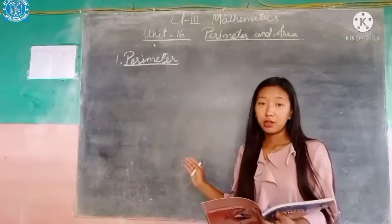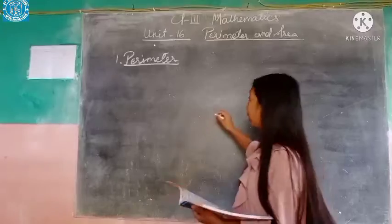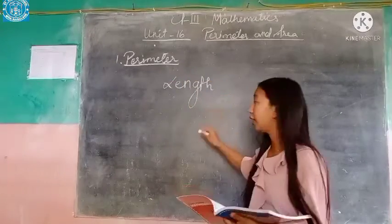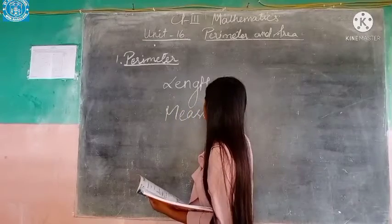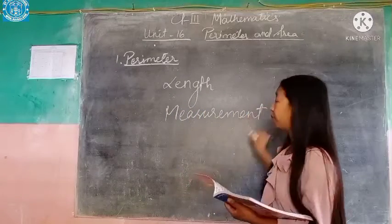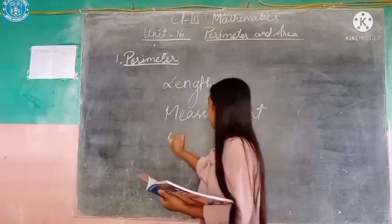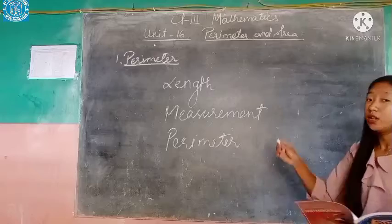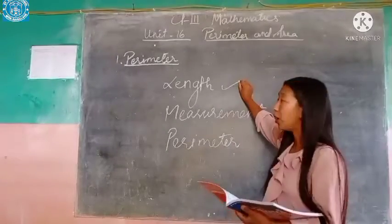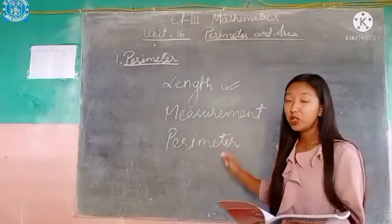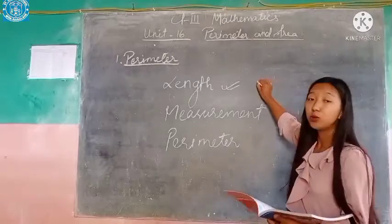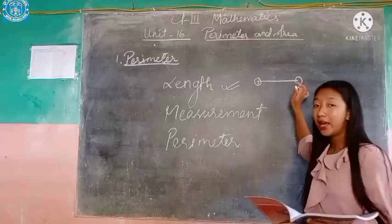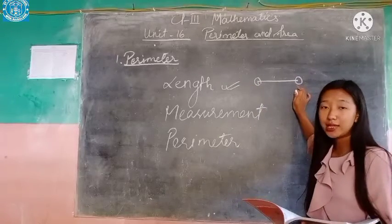So what is perimeter? First thing you will have to know is about length. When we talk about length, it is the measurement of one end to the other. So if this is the line, from this end of the line to the other end will be called the length.